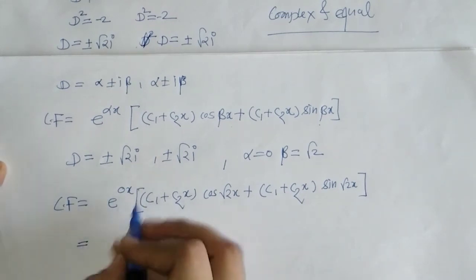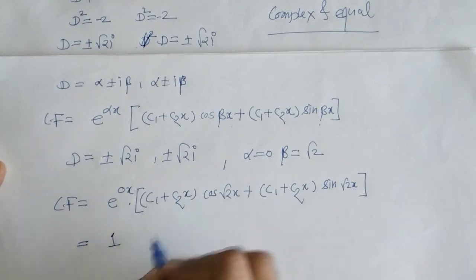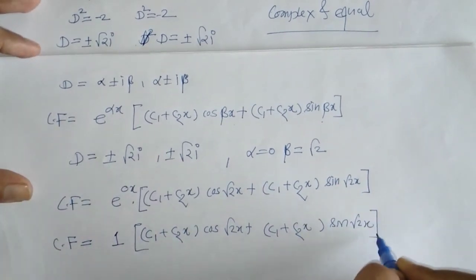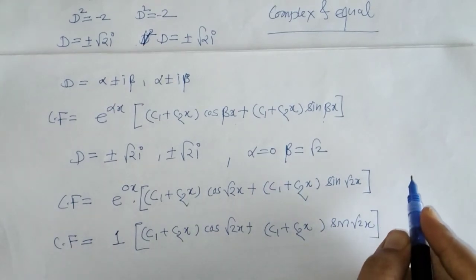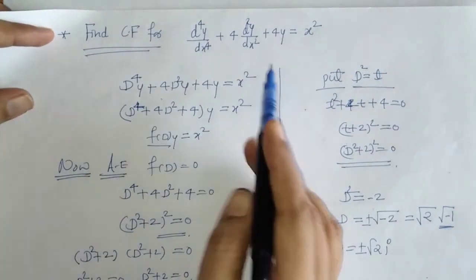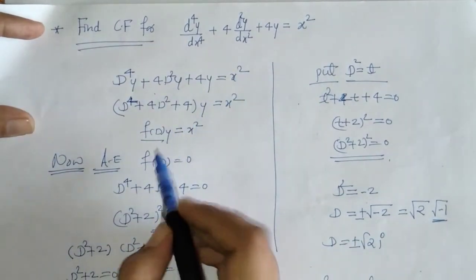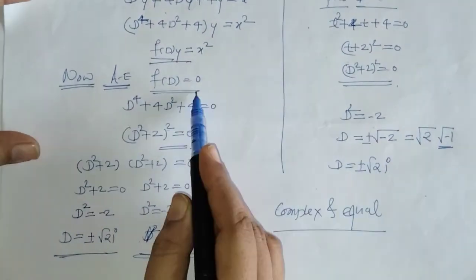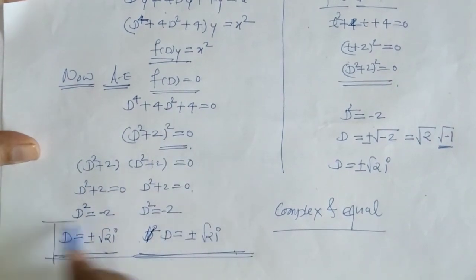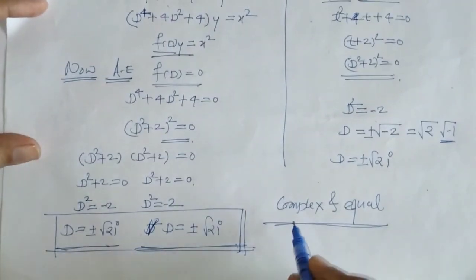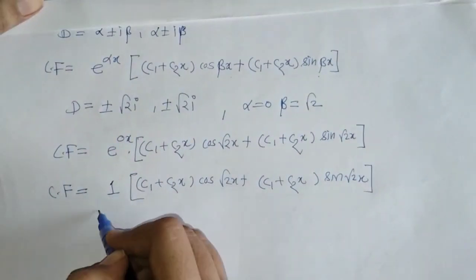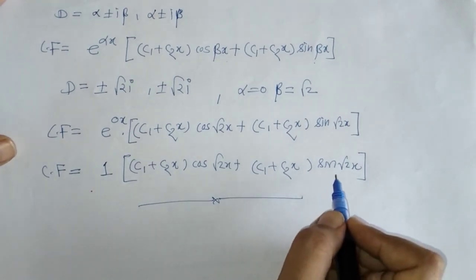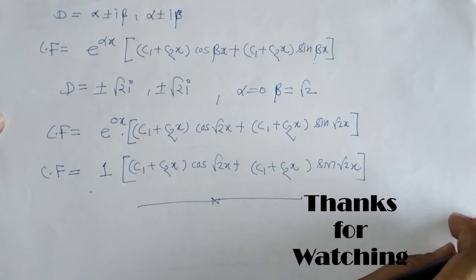On simplification, since alpha = 0, e^0 = 1. In this way we have found the CF for the given differential equation. The process: first write the equation in symbolic/operator form, then find the auxiliary equation, then find its roots, and depending on the roots — here a pair of complex equal roots — write the CF. That's it for now, see you in the next video, thank you, keep watching.